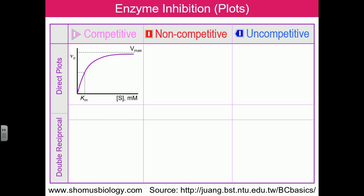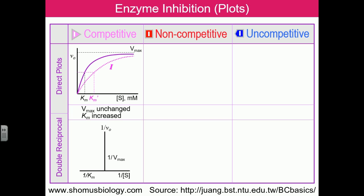For competitive inhibition in the direct plot, you see a graph that starts with exponential growth and reaches saturation at the maximum velocity Vmax. The substrate concentration at which half of Vmax is achieved is Km. When a competitive inhibitor is added, the graph shifts — the Km value increases, meaning affinity for substrate decreases. However, Vmax remains unchanged, because increasing substrate concentration can replenish the effect and ultimately achieve the same maximum velocity.